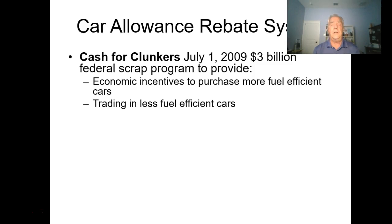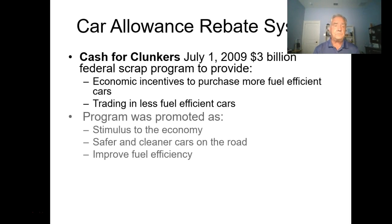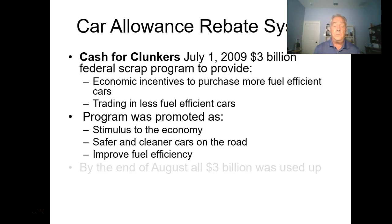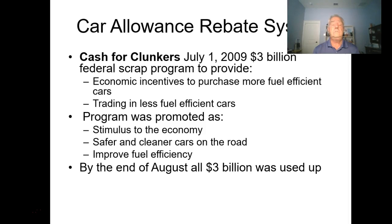Cash for Clunkers launched July 1st, 2009 with $3 billion in federal scrap program money to provide economic incentives to purchase more fuel-efficient cars and trade in less fuel-efficient ones. The program was promoted as an economic stimulus, a way to get safer and cleaner cars on the road, and to improve fuel efficiency. By end of August—just 60 days later—the entire $3 billion was completely used up.